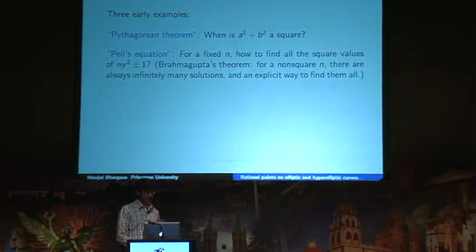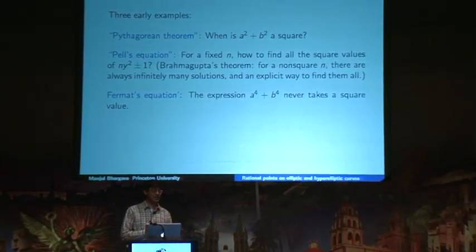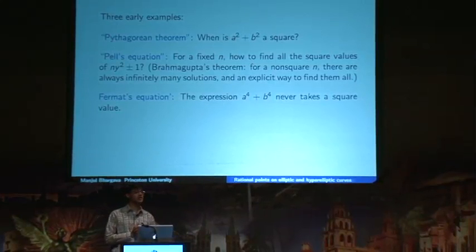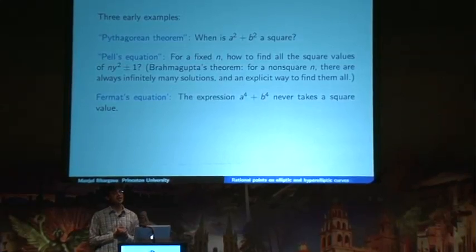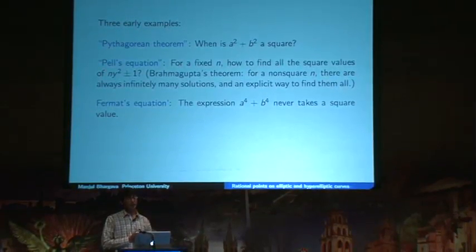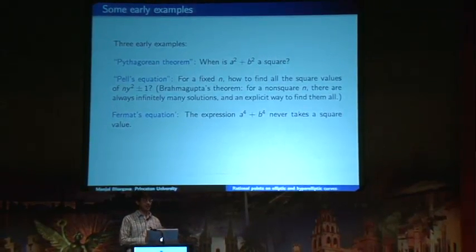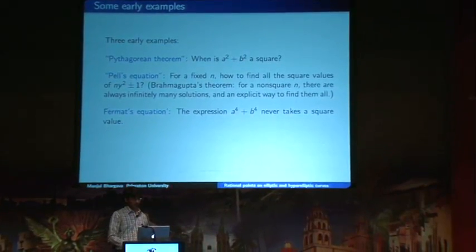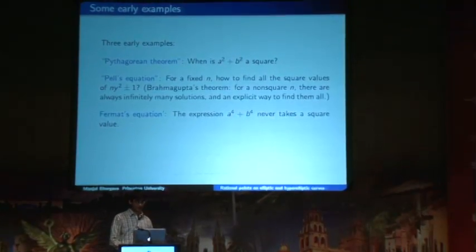That also goes back over a thousand years. A more modern example, only a few hundred years old, is Fermat's equation. Fermat showed — and this was one of the first examples of Fermat's Last Theorem that was proven, proven by Fermat himself — that the expression a⁴ + b⁴ never takes a square value. In particular, a⁴ + b⁴ = c⁴ has no solution. But he proved something stronger: he showed that a⁴ + b⁴ = c² in fact has no solution.